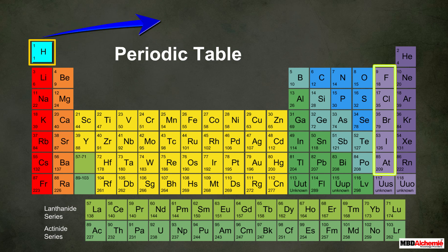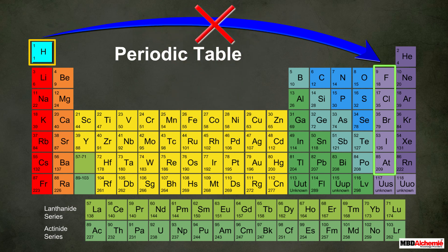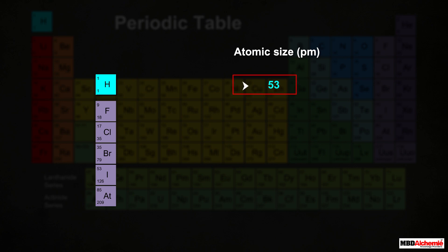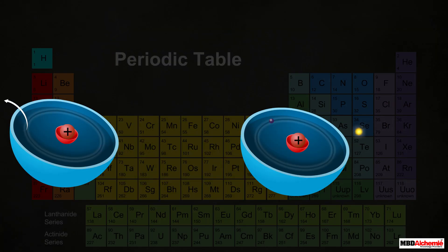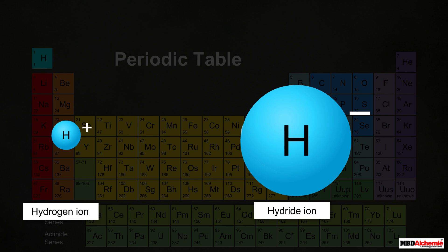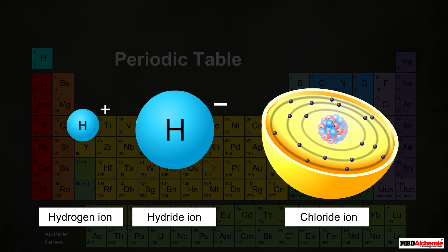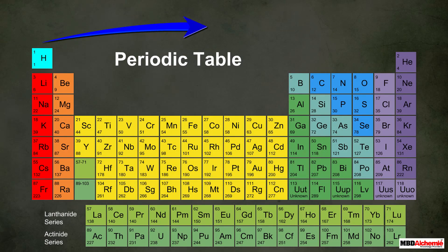Looking at the similarities between halogens and hydrogen, hydrogen could be placed with the halogens in Group 17. But due to some dissimilarities, it is not placed there. The main difference is of size: hydrogen is one of the smallest elements, whereas the size of halogens is quite large. Moreover, hydrogen can both lose and gain an electron, forming both negative and positive ions. On the other hand, halogens can only gain electrons and thus form only negative ions. Therefore, hydrogen cannot be placed with the halogens in Group 17 either.